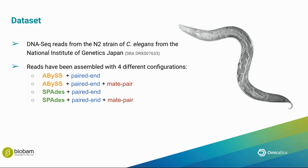To perform the analysis, I will be using DNA-seq reads from the N2 strain of C. elegans from the National Institute of Genetics of Japan. I will assemble them with four different configurations: using the algorithm Abyss or SPAdes, and using only paired-end reads, or with additional mate pair data that helps during the scaffolding step.